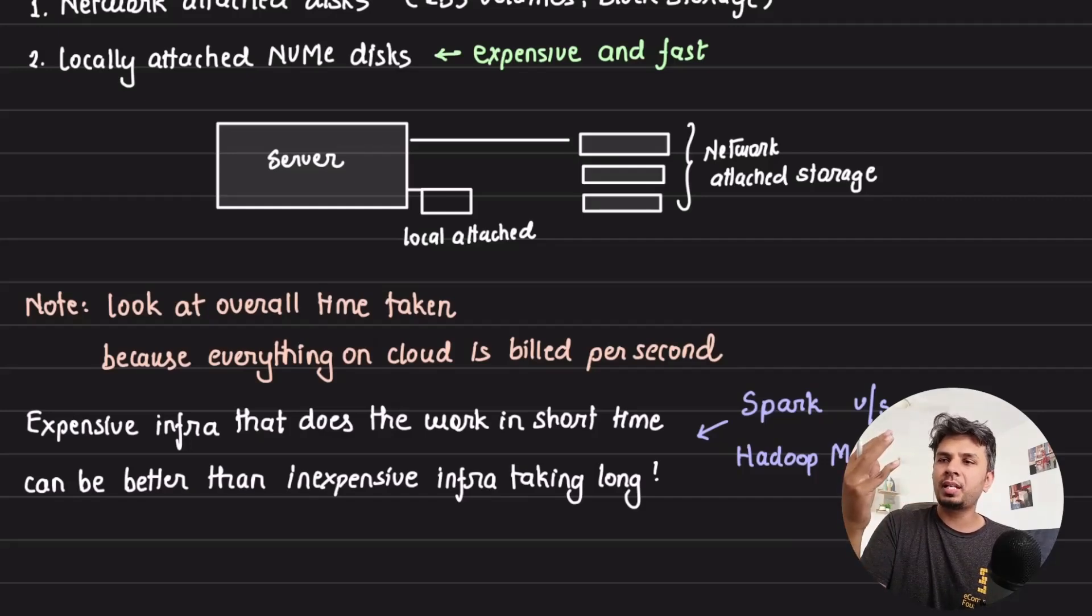So initially when someone looked at it, they'd say, hey, why are you using in memory, like RAM to do such high computation, but the trade-off paid off. The Spark job ran in much lesser time, although on expensive hardware, but you would overall save money, like save a ton of money with that. That's the whole idea.